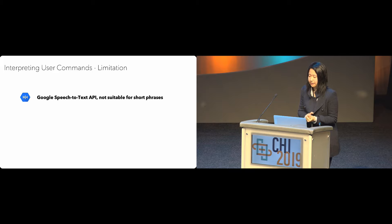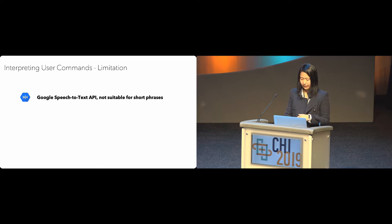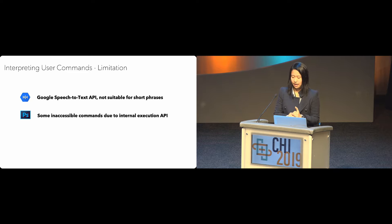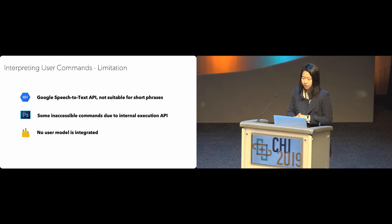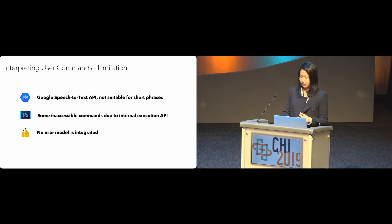Our architecture has some limitations. Google's speech-to-text API is optimized for longer conversational dialogue, so converting short phrases performs less accurately. We also rely on the Photoshop execution API, so VoiceCuts' capability is bounded by that internal API. Lastly, we did not incorporate any user models to resolve disambiguation — for example, if we know a user prefers a certain tool over another, we could prioritize that tool based on user understanding.